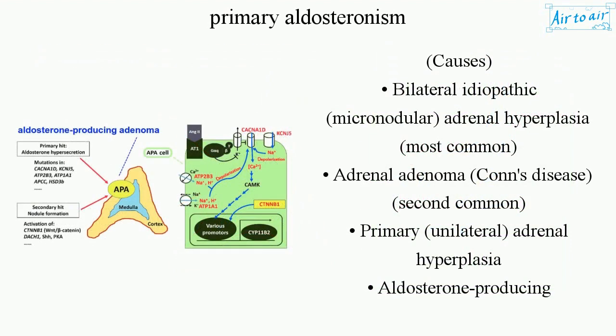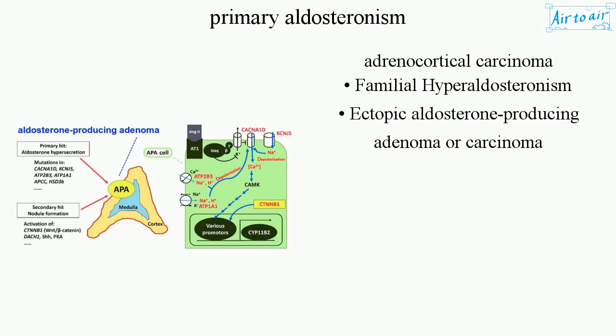Causes include bilateral idiopathic micronodular adrenal hyperplasia (most common), adrenal adenoma or Conn's disease (second most common), primary unilateral adrenal hyperplasia, aldosterone-producing adrenocortical carcinoma, familial hyperaldosteronism, and ectopic aldosterone-producing adenoma or carcinoma.